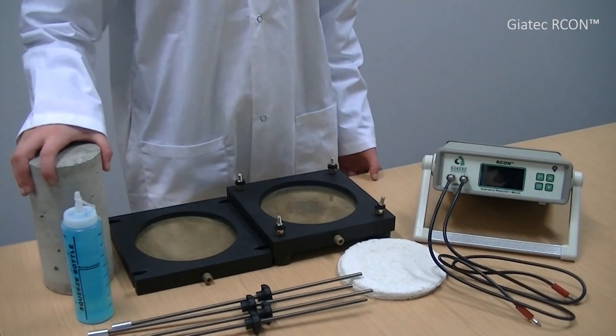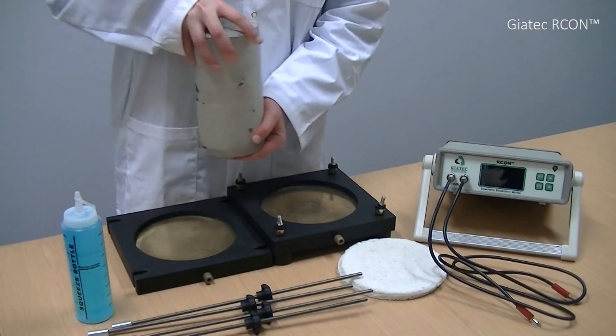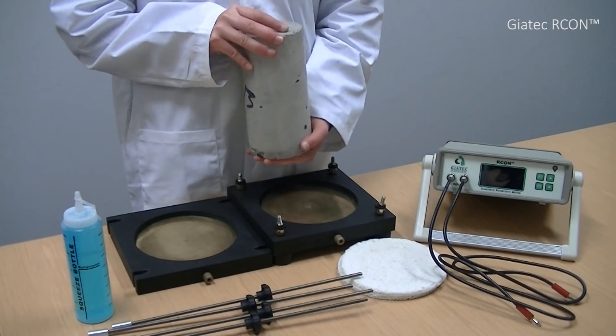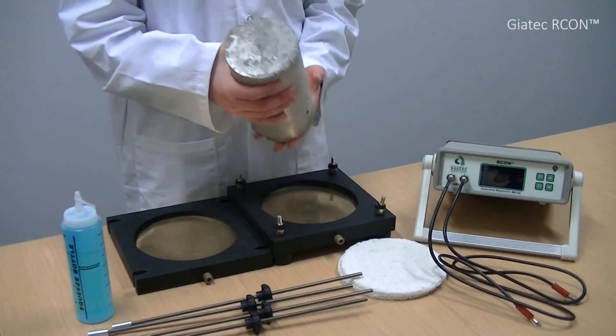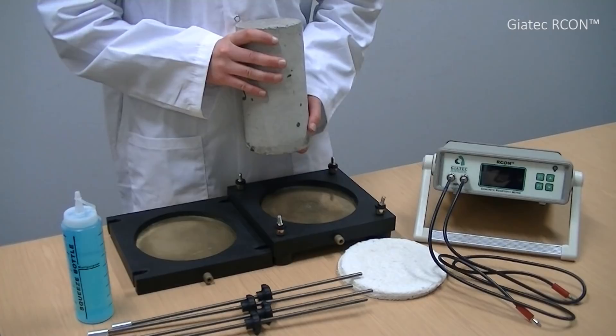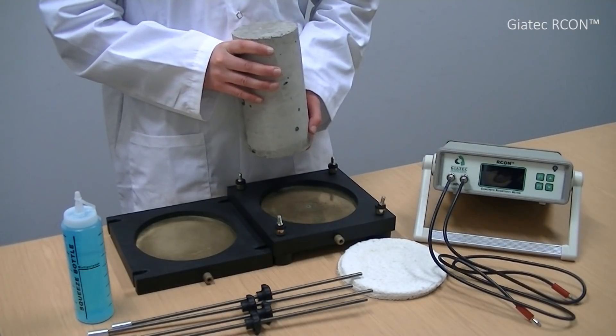First, I need to prepare my concrete sample like this. You can fit cylindrical samples with a maximum size of 150mm by 300mm and cubic samples with a maximum size of 100mm by 100mm in the Archon sample holder.